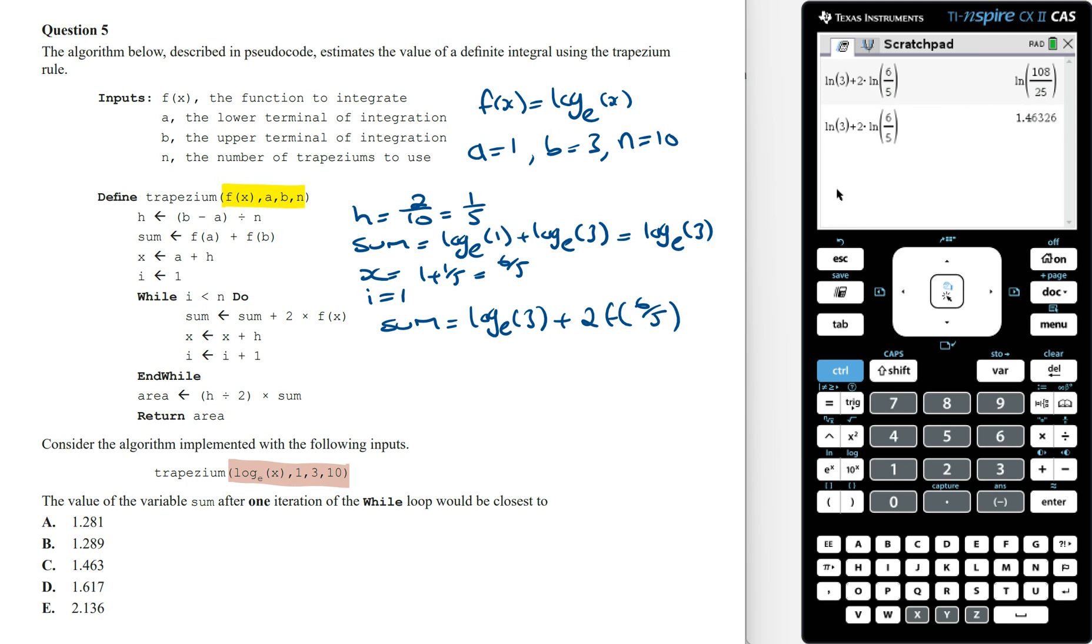Correct to 3 decimal places, this equals 1.463, which is option C. That's it for this question.